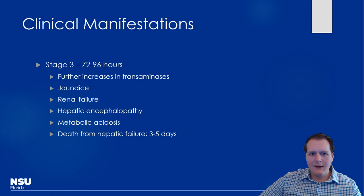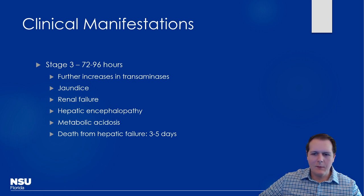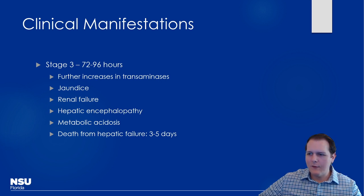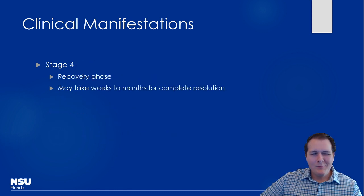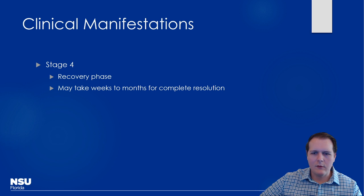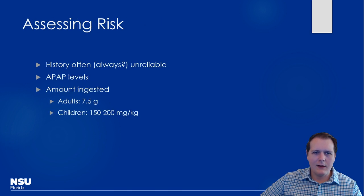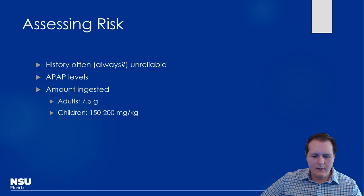Stage three — three to five days — is where patients most frequently die. Transaminases can rise into the tens of thousands. Jaundice appears, along with renal failure, cardiac toxicity, and altered mental status from encephalopathy due to liver dysfunction. Stage four is recovery — it can take weeks to months for complete resolution, but the liver is an amazing organ that can repair itself. In some cases, liver transplant is required, though not common.